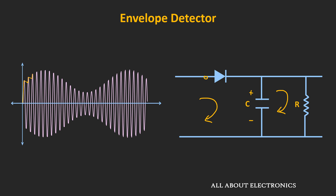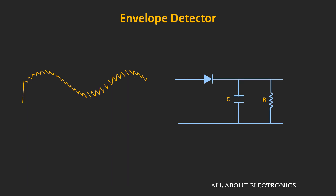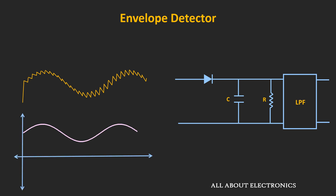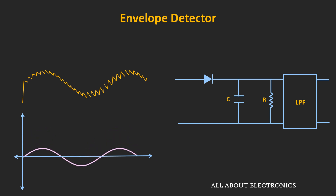If we see the output across this resistor, it will look like this. By using a low-pass filter, the ripples in the output can be removed, and further using a DC blocking capacitor, the DC component can be removed. In this way, it is possible to recover the message signal from the AM signal using this envelope detector.